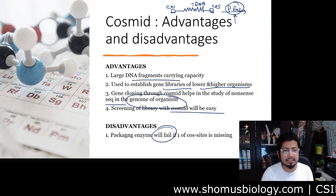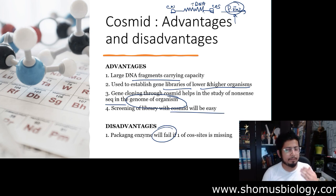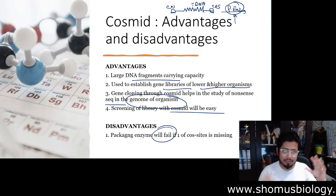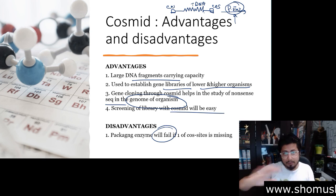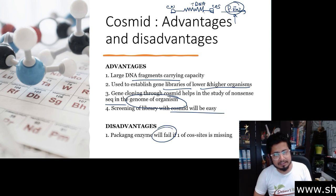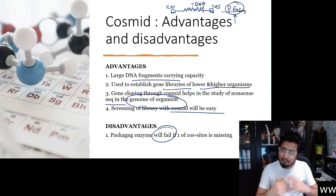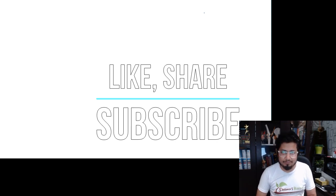Overall, Cosmid has the best parts from the plasmid and the best parts from the bacteriophage combined. Cosmid is used extensively in the construction of genomic DNA libraries — not cDNA libraries, but genomic DNA libraries. That is all about Cosmid as a DNA vector for gene delivery.